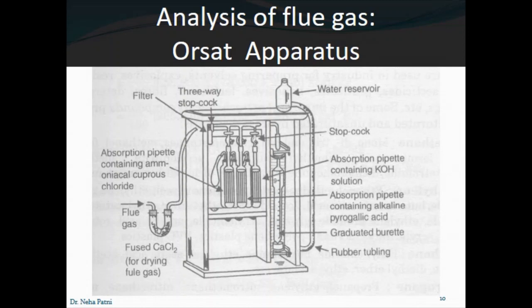Let us see the analysis one more time with another figure. Here you can see E is the entrance of the flue gas, where you provide your flue gas. Then you have a U-tube which contains glass wool and anhydrous calcium chloride. Glass wool is used to screen the flue gas from dust or dirt, to purify the gas before sending it to the apparatus. Anhydrous calcium chloride absorbs moisture. So the gas coming after the U-tube is pure and dry.